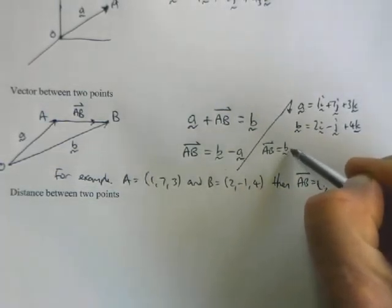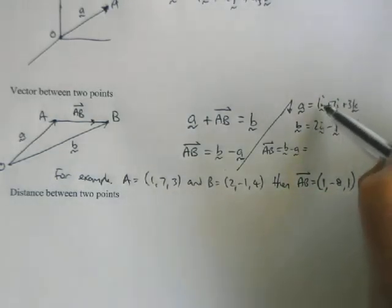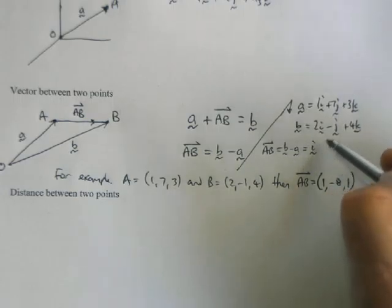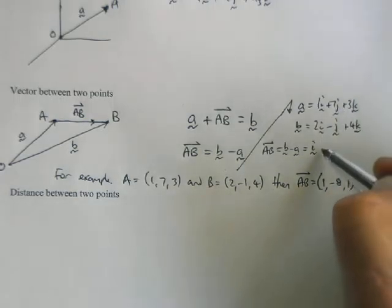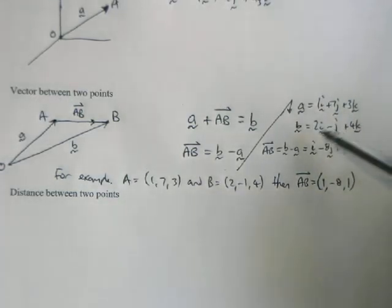And then I could have done a subtraction, AB is vector B minus vector A, and I've come up with 2i minus 1i is 1i. Negative 1j take away 7j is minus 8j.